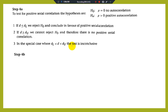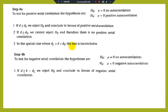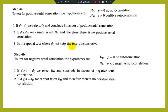Step 4B: to test for negative serial correlation, H₀ is ρ = 0 and the alternative is ρ < 0 (negative autocorrelation). If D > 4−D_L, we reject H₀ and conclude in favor of negative autocorrelation. If D ≤ 4−D_U, we cannot reject H₀ and there is no negative serial correlation. If 4−D_U < D < 4−D_L, the test is inconclusive.